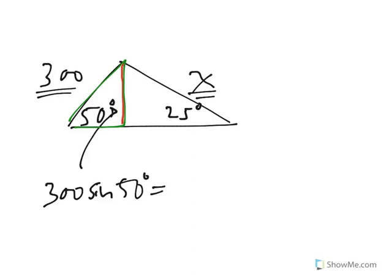On the other hand, if I think of it as part of this triangle on the right, it's x times—x is the hypotenuse—x times sine 25.